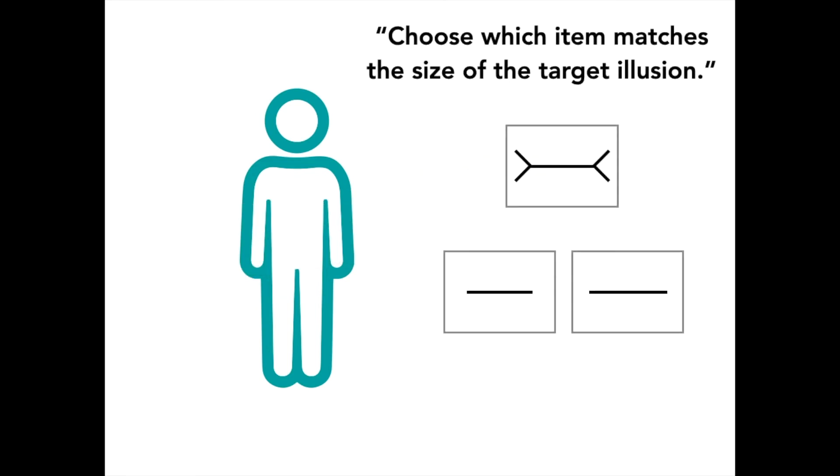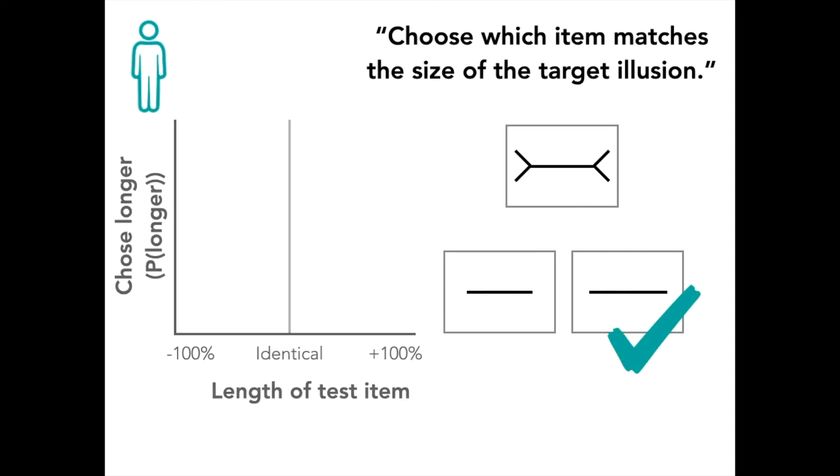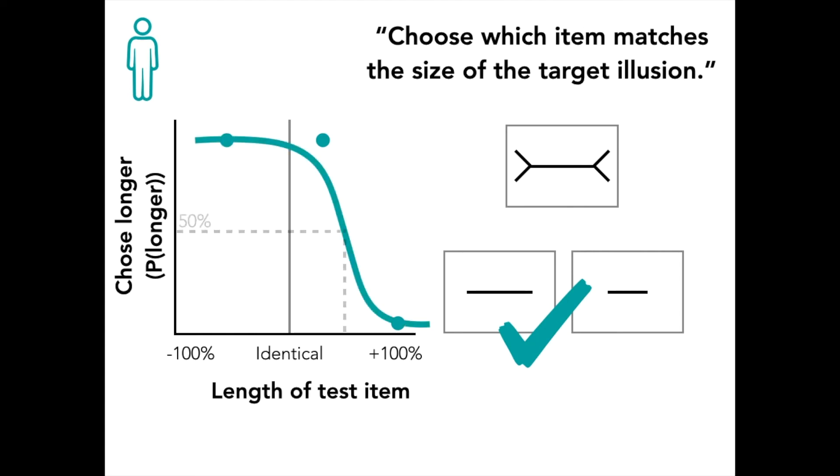Assessing illusions in people is relatively easy. If I were testing you, I would present you with the target illusion and these two choices and ask you which item matches the size of the target illusion. Here, maybe you'd think it's a longer line and choose that one. I can then plot it like this. On the x-axis is the length of the test item, and on the y-axis is whether or not you chose the longer of the two items. Here, the longer line was chosen, and it's longer than the identical line, so that would yield a point here. When the test item gets too long, you will choose the shorter line, yielding a point here. Alternatively, when the test item is too short, you'll choose the longer line yielding a point here.